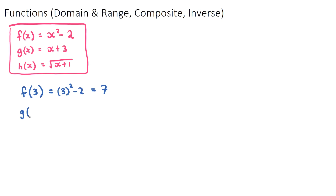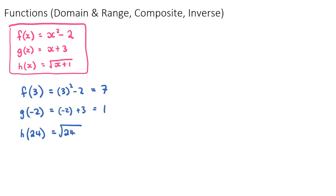If I had g of negative two, I need to find the g(x) function and replace x with negative two. So negative two plus three gives a output of positive one. And finally, if I had h of 24, we substitute 24 for x, giving us the square root of 24 plus one, which is the square root of 25, which is five.